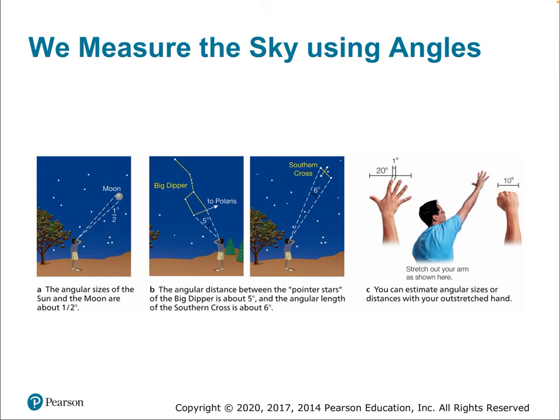When we look up into the local sky, one thing to think about is angular size. The Sun and the Moon both take up about half a degree, which is not very much. It's 90 degrees from horizon to zenith, and the Moon only takes up about half a degree — you could stack 180 moons to go from the horizon straight up to the zenith. The Moon is actually pretty small, taking up just half a degree in diameter.